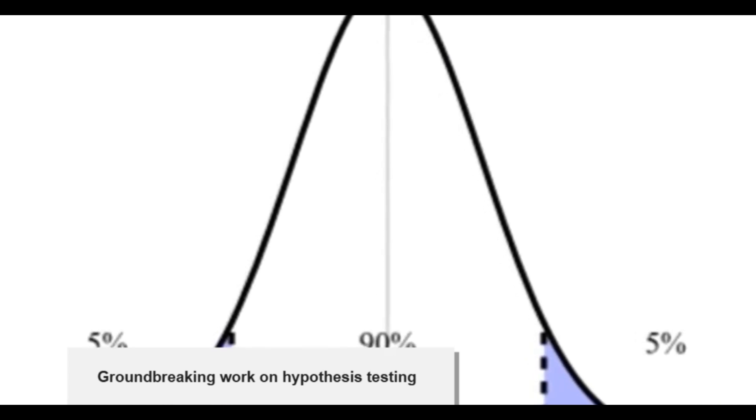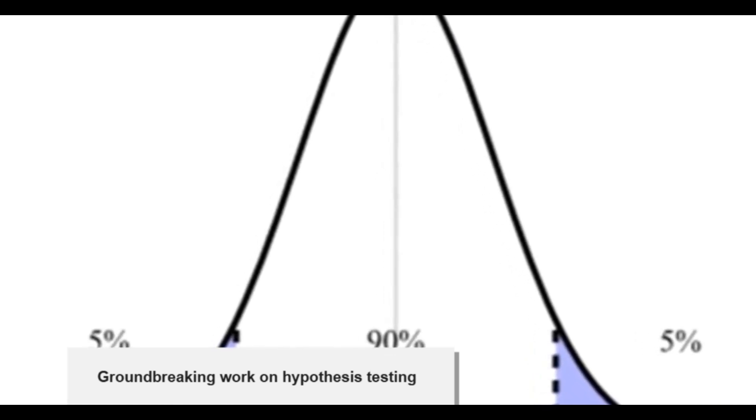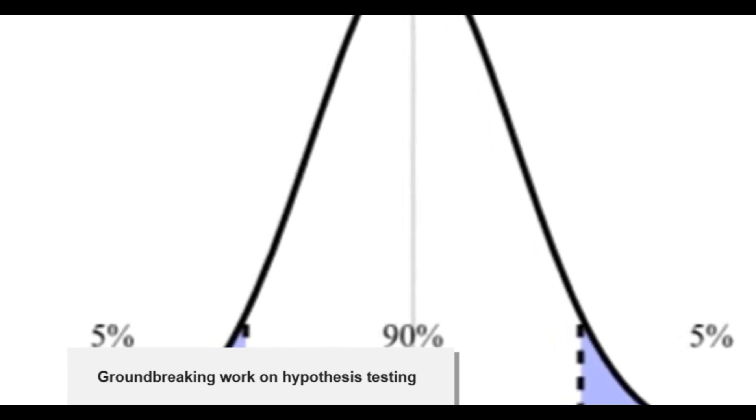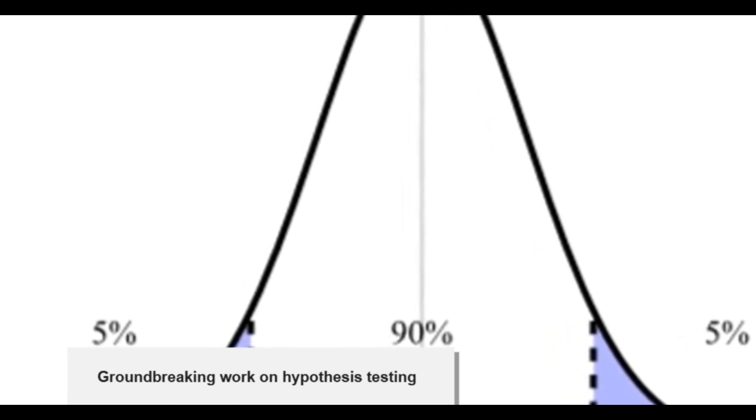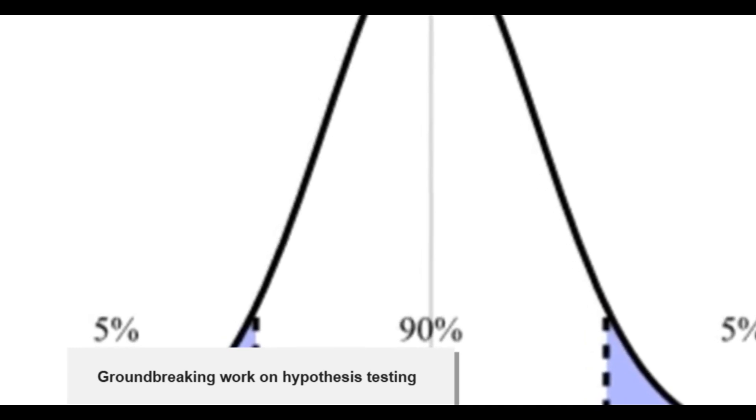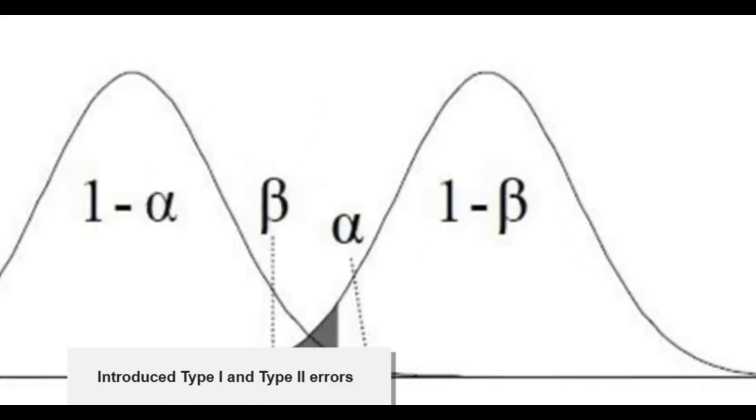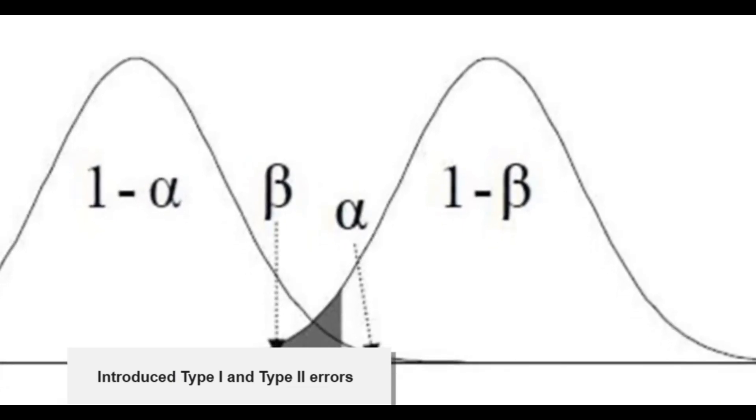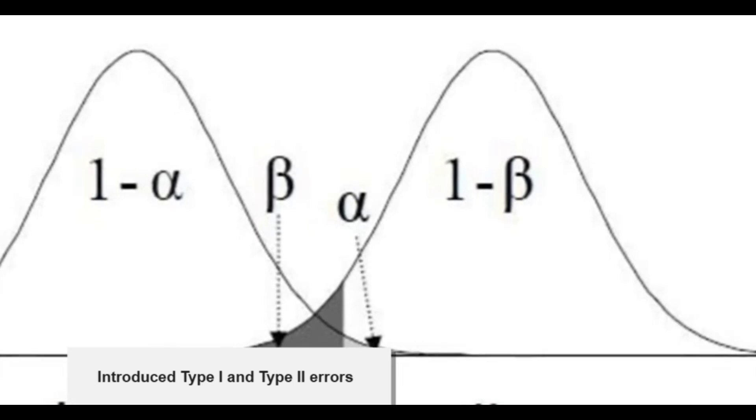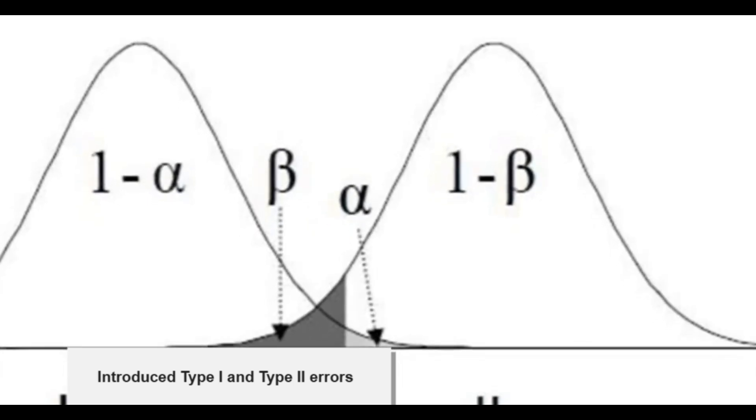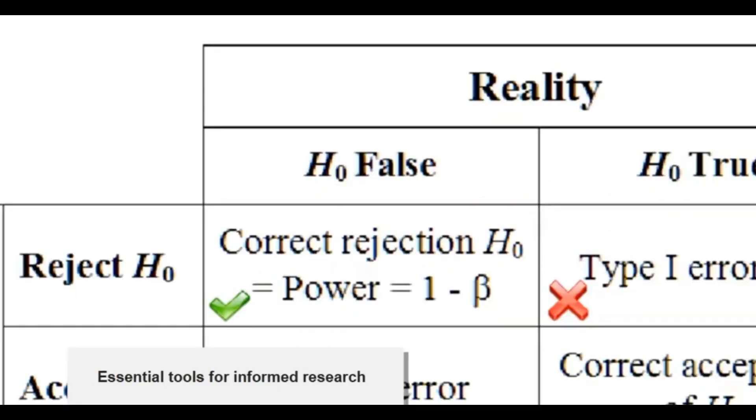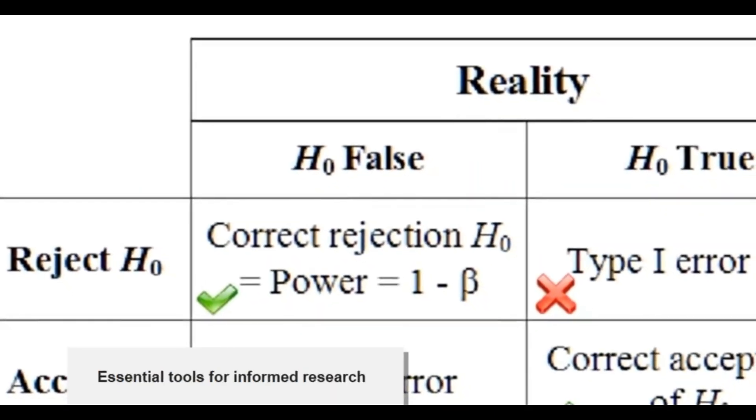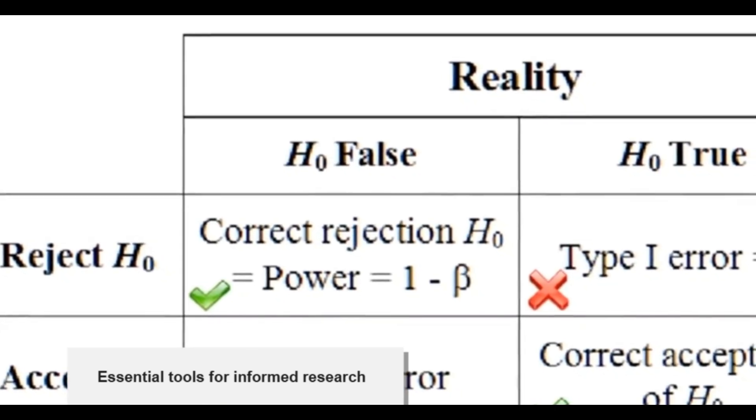Neyman's contributions to statistical theory were groundbreaking and far-reaching. He is best known for his work on hypothesis testing and confidence intervals, two fundamental concepts that form the backbone of modern statistical analysis. His approach to hypothesis testing, developed in collaboration with Egon Pearson, introduced the concepts of type 1 and type 2 errors, power, and alternative hypotheses. These ideas have become essential tools in scientific research, allowing researchers to make informed decisions based on data.